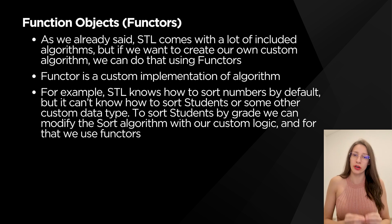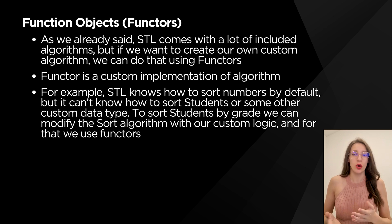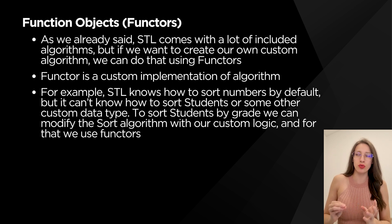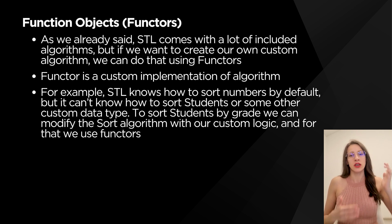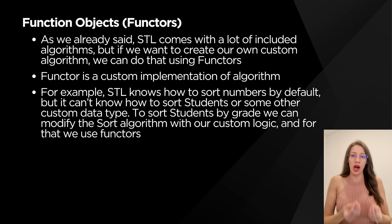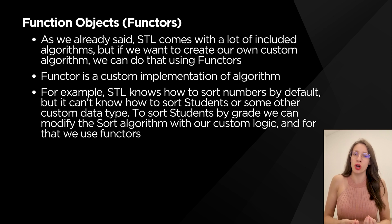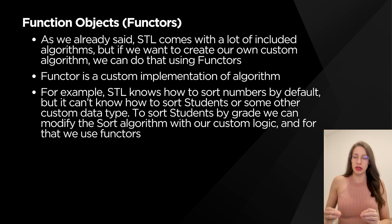To write our own algorithms, we use something called function objects, which are also known as functors. Functors give us the option to write our own custom algorithms or to customize existing algorithms. For example, in STL you already have algorithms to sort numbers — say, integers from smallest to biggest. But if you want to sort students, you would have to write your own functor, because sorting students requires additional information: should they be sorted by age, grade, gender, name, or something else. Please don't be afraid if you don't understand this immediately, because we will cover each one of these in a separate video with practical examples.